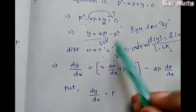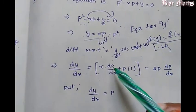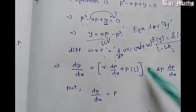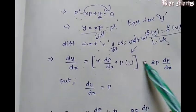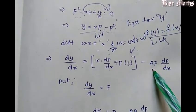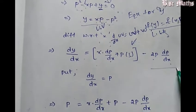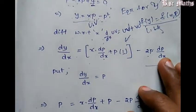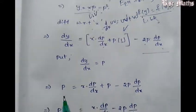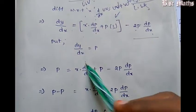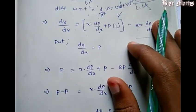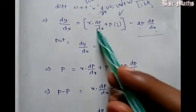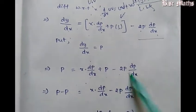We need to use x and p differentiation with dp by dx. Plus p and x is 1. So we apply this formula. We get: p equals x, here we add dp by dx, plus p minus 2p into dp by dx.